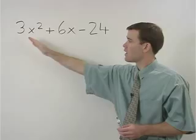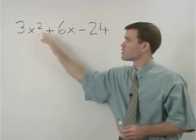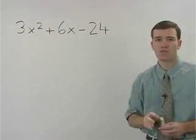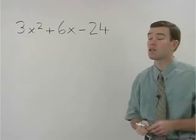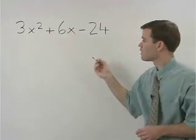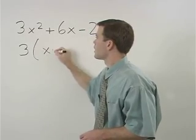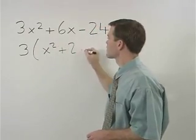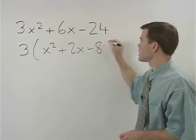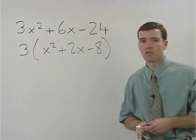Notice that for every term in your original problem, there's a factor of 3. That means that a 3 can factor out of the trinomial, and you're left with x squared plus 2x minus 8 inside the parentheses.